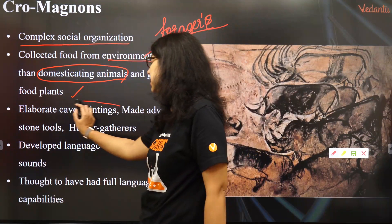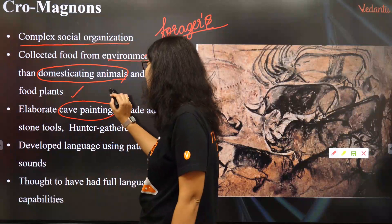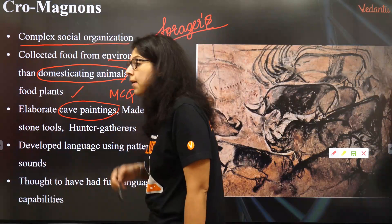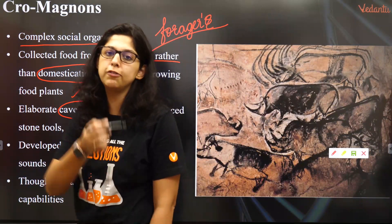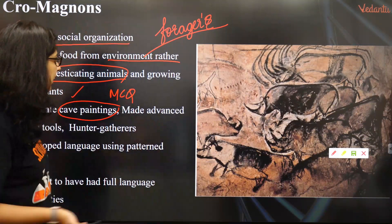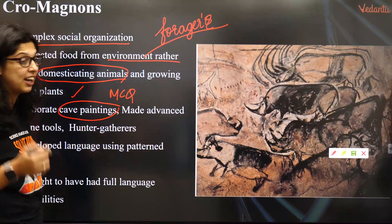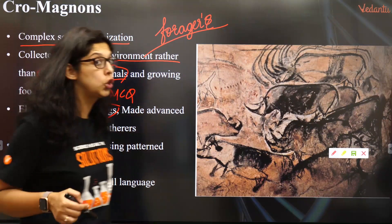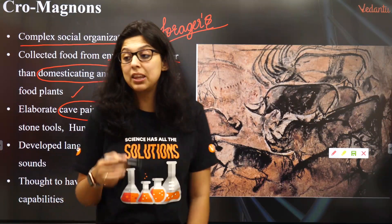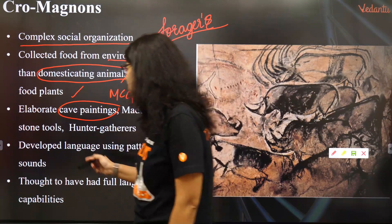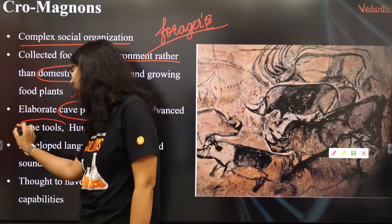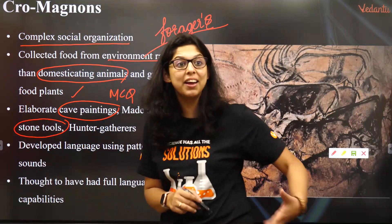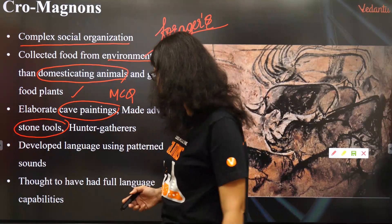They made elaborate cave paintings — a direct MCQ question. They made beautiful, elaborate cave paintings, something like Ajanta and Ellora. They also made advanced stone tools and were the first ones to make very elaborate, high-quality carved stone tools.